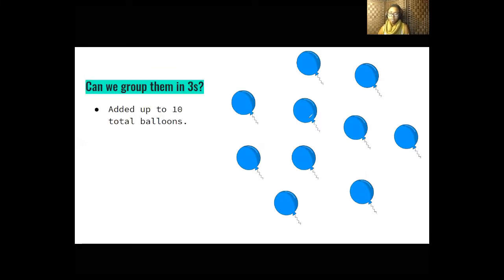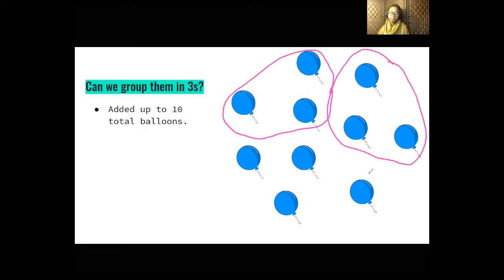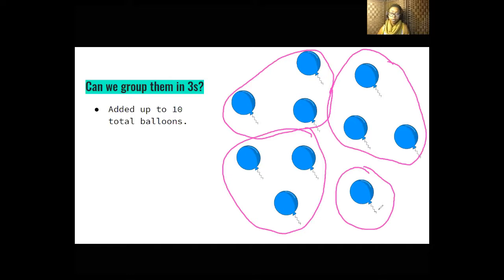Let's try to group our balloons in groups of three. We'll draw a circle around groups of three: one group of three, two groups of three, and three groups of three. Then we have this one balloon that is its own group. So we're actually not able to draw our ten balloons into equal groups of three because we have one left as a group of one — three is not going to work for equal grouping.